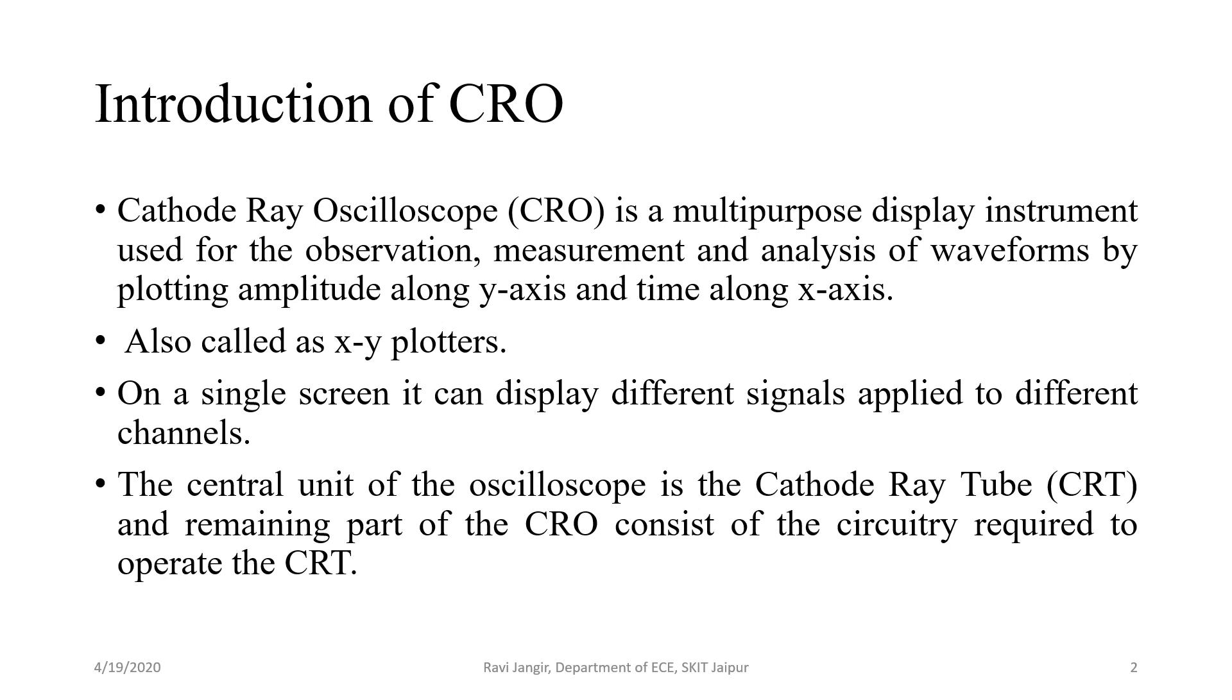The central node of oscilloscope is cathode ray tube and remaining part of CRO consists of the circuitry required to operate that CRT. It means that CRT acts as a heart of oscilloscope. So, let's start with our topic CRT.